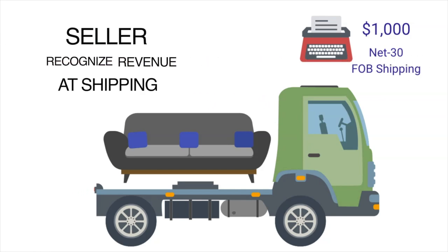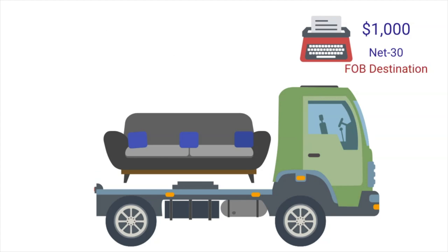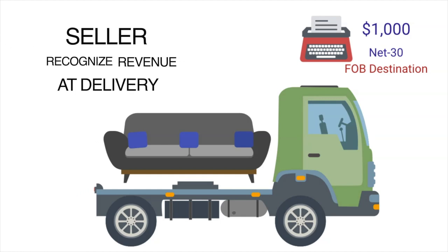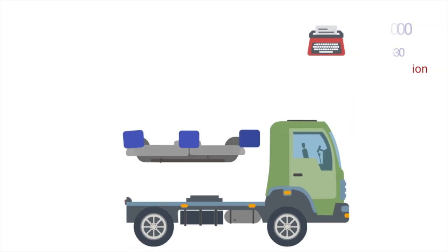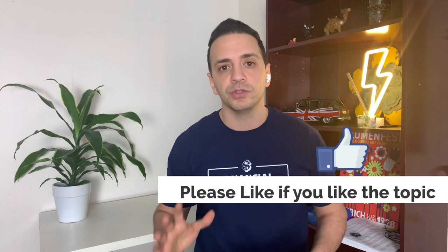In this case, ownership transfers to the customer at the point of shipping, and that's when the seller can recognize the revenue. To contrast, if the terms are net 30 and FOB destination, ownership transfers at the point of delivery. This matters a lot — if shipping happens on December 28th of year one but delivery happens on January 1st of year two, it makes all the difference in whether the seller recognizes revenue in year one or year two.